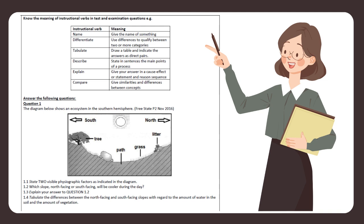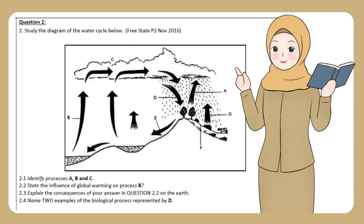Question 1: The diagram below shows an ecosystem in the Southern Hemisphere (Free State P2 November 2016). 1.1 State two visible physiographic factors as indicated in the diagram. 1.2 Which slope — north-facing or south-facing — will be cooler during the day? 1.3 Explain your answer to question 1.2. 1.4 Tabulate the differences between the north-facing and south-facing slopes with regard to the amount of water in the soil and the amount of vegetation. Question 2: Study the diagram of the water cycle below (Free State P2 November 2016). 2.1 Identify processes A, B, and C. 2.2 State the influence of global warming on process B. 2.3 Explain the consequences of your answer in question 2.2 on the earth. 2.4 Name two examples of the biological process represented by D.